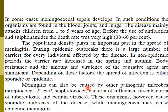Meningitis can also be caused by other pathogenic microbes. Pneumococcal meningitis is caused by Streptococcus pneumoniae; tubercular meningitis by Mycobacterium tuberculosis; streptococcal meningitis by Streptococcus; coliform meningitis by coliform bacteria like E. coli; and certain viruses may also cause meningitis. These other organisms cause sporadic outbreaks, while meningococcal meningitis may cause epidemic meningitis.